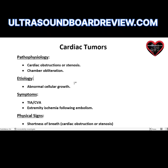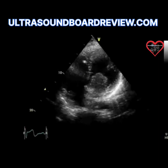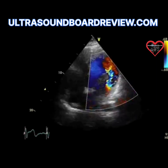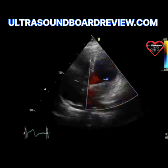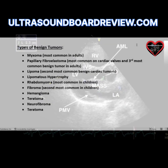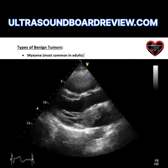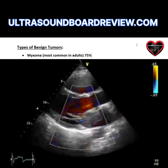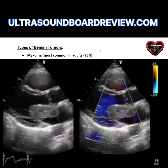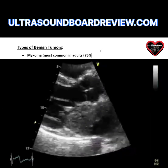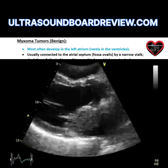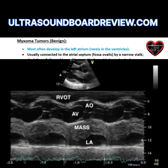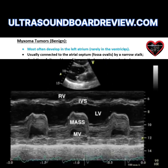I'll give you enough information that you'll need to know for your boards. The most common benign tumor is the myxoma. The myxoma tumor accounts for probably about 75% of all the primary benign tumors. Myxoma tumors are more often found in the left atrium and rarely found in the ventricles.